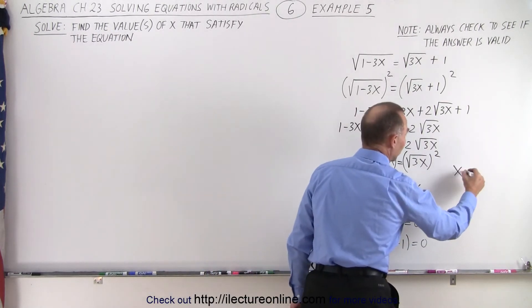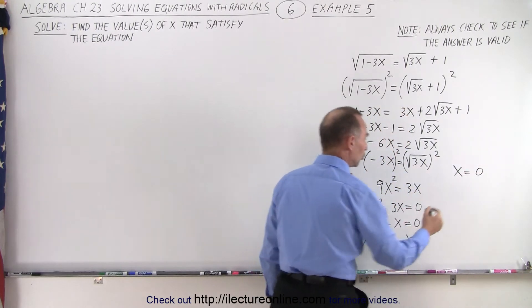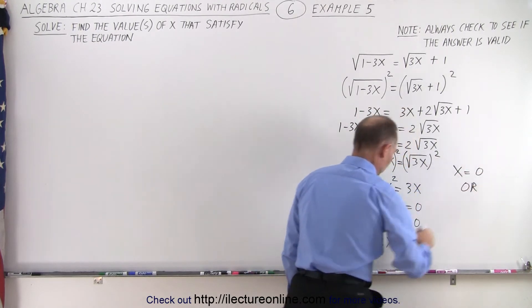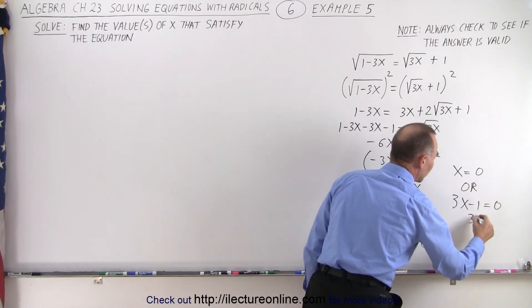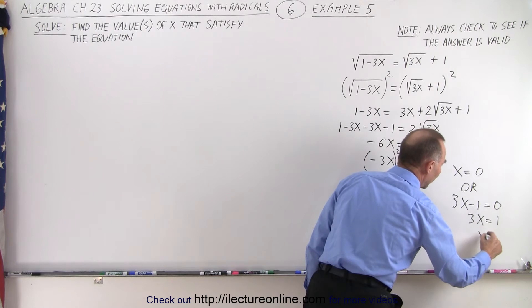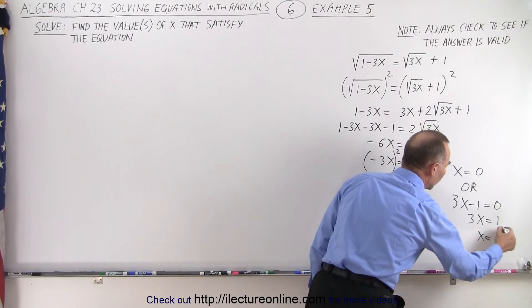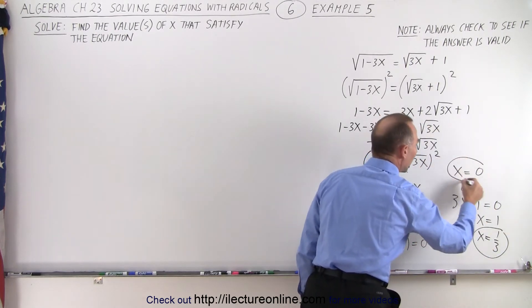In other words, x must equal 0 as a possible solution. Or, what's inside parentheses, 3x minus 1 must equal 0, which means that 3x equals 1 or x equals 1 third. So notice we have two possible solutions.